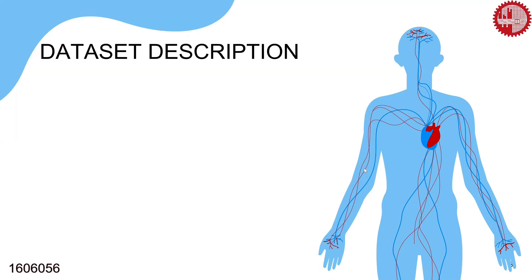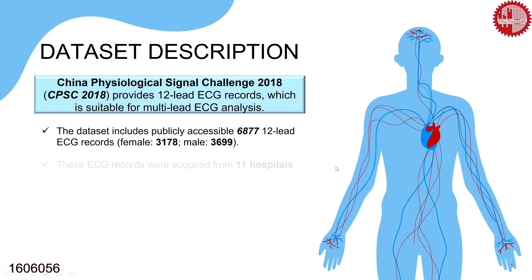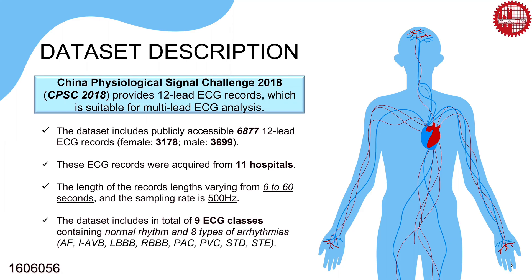Let's talk about the dataset. We chose a well-known and relatively new dataset, the China Physiological Signal Challenge 2018, which provides parallel-lead ECG records suitable for multi-lead ECG analysis. There are 6,877 ECG records collected from 11 hospitals, sampled at 500 Hz, consisting of 9 classes of arrhythmia labelings.